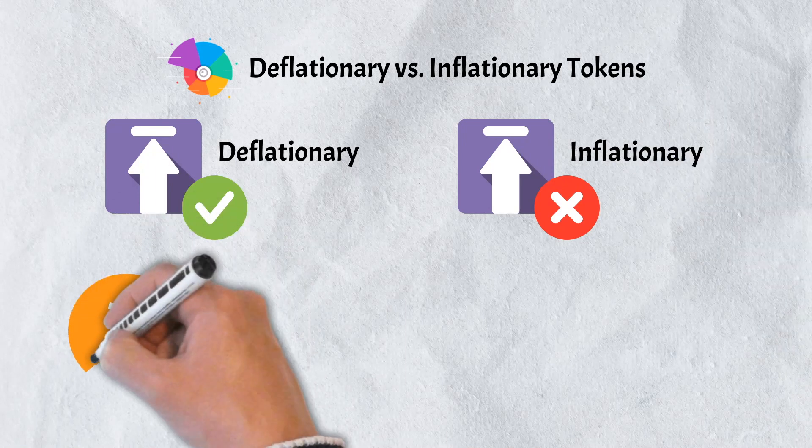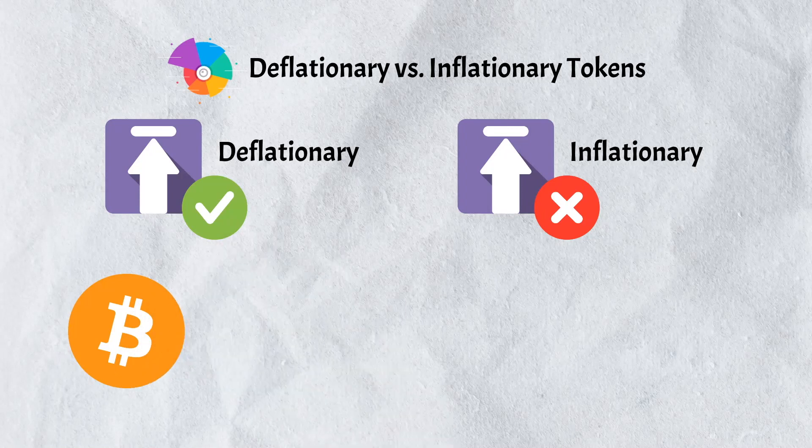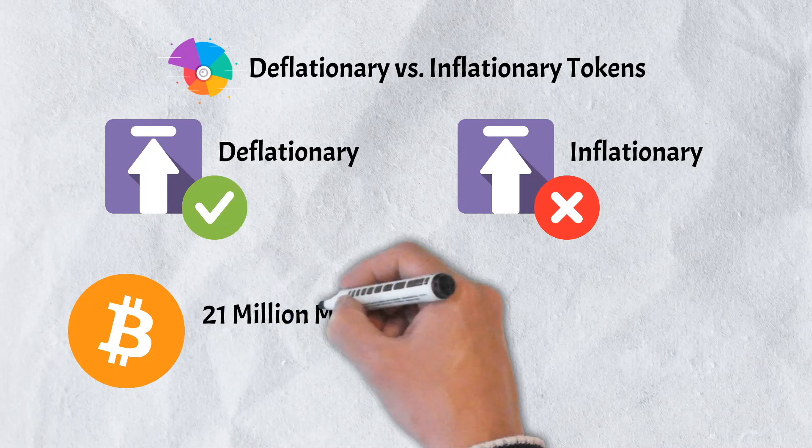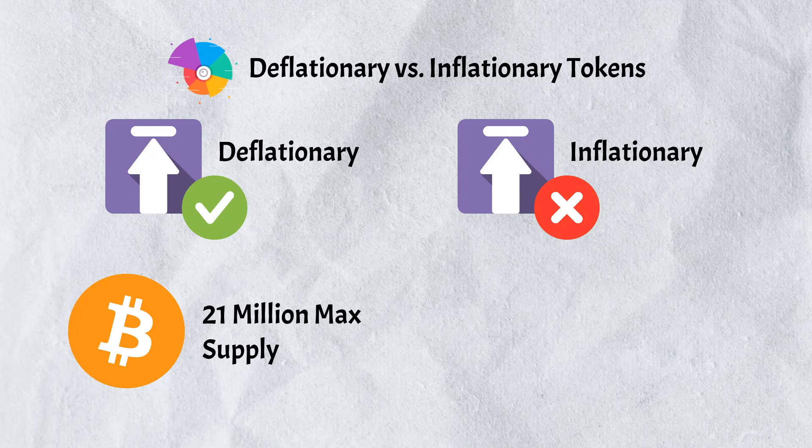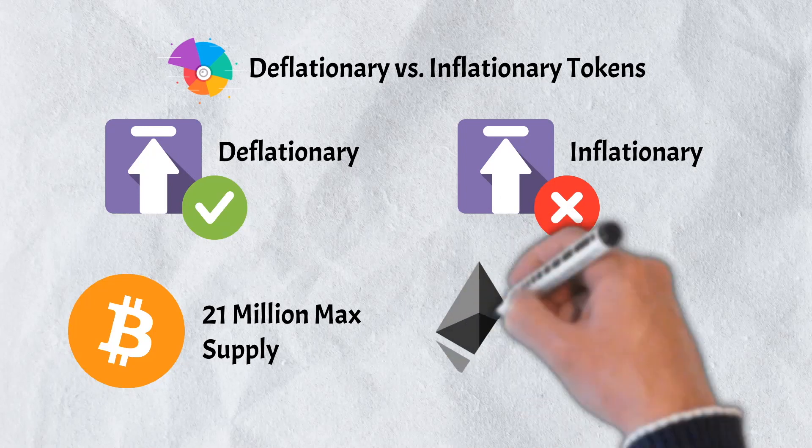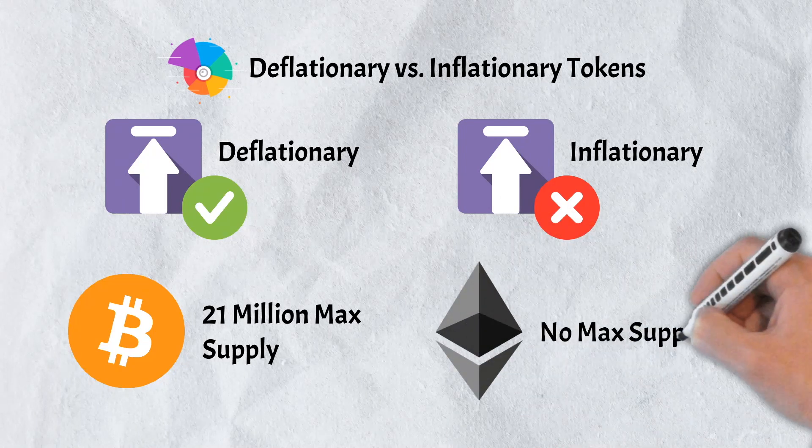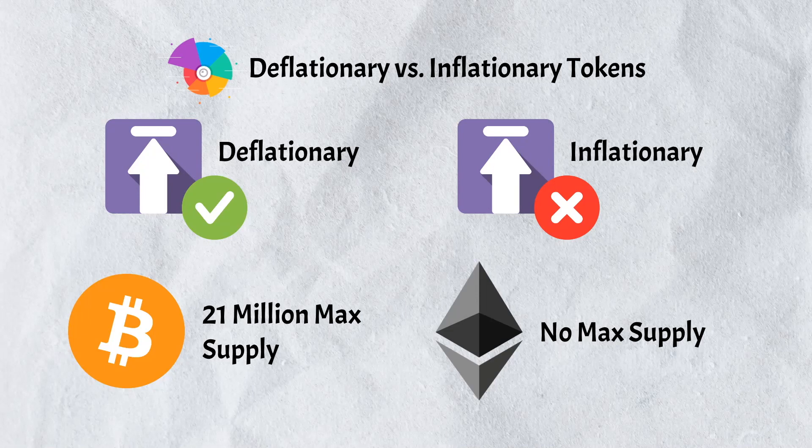As previously mentioned, Bitcoin has a maximum supply. There are only 21 million Bitcoins that can ever be mined and brought into circulation. Because of this, it is considered to be deflationary. Ethereum, on the other hand, has no maximum supply, and is therefore inflationary.